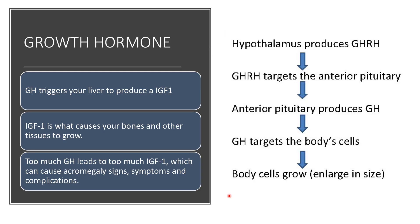In this simplified flowchart, you can see that the hypothalamus produces growth hormone-releasing hormone, which targets the anterior pituitary to produce growth hormone. Growth hormone targets body cells such as liver cells to produce insulin-like growth factor 1 (IGF-1). IGF-1 binds to IGF-1 and insulin receptors and has a proliferative effect on cartilage, skeletal muscle, bone, skin, soft tissue, and organs. It also causes impaired glucose tolerance through binding to insulin receptors. Too much growth hormone leads to too much IGF-1, which causes the signs, symptoms, and complications of acromegaly.